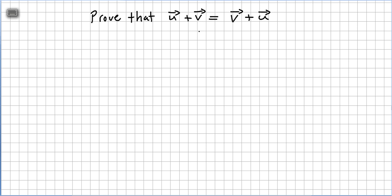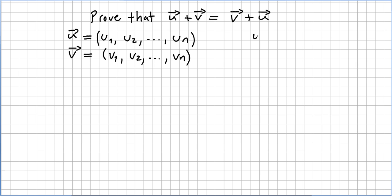Prove that u plus v equals v plus u. Vectors u and v are both in the vector space Rn. Vector u will be a vector with components u1, u2, u3, etc., till un. And vector v will be the vector v1, v2, etc., till vn.